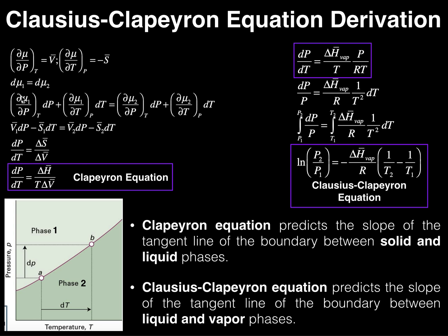From here I can divide both sides by dT, and if I group the entropy terms and the volume terms I can rearrange this into a differential equation: dP/dT equals the change in molar entropy divided by the change in molar volume. This is almost at the Clapeyron equation.